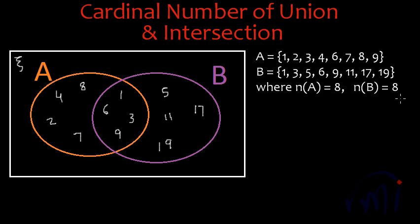For those for whom cardinal number is a new concept, let me explain: the cardinal number of a set is the number of distinct elements in that set. Any element can appear only once in a set. The cardinal number is represented as N(A) — N followed by the name of the set in brackets.